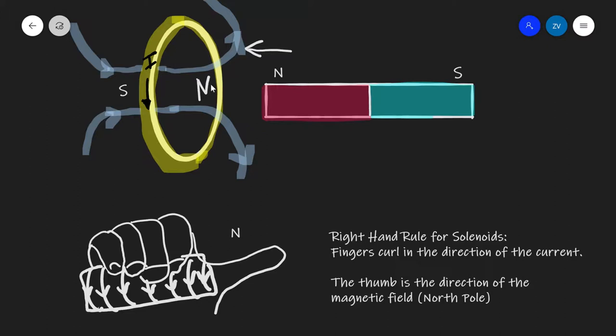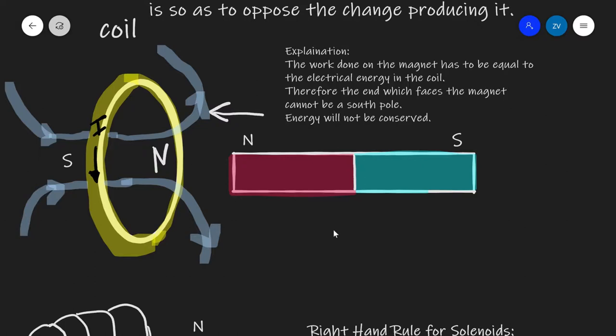Okay guys, now here's how to explain this really fascinating phenomena. As we bring the magnet inwards, we're doing some work. We're applying some force and we're moving at a certain distance. We're applying some joules. And this work on the magnet has to equal the electrical energy that's been produced in the coil.